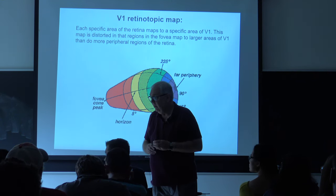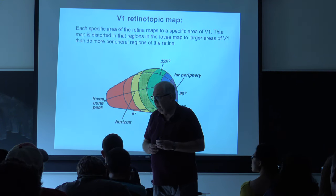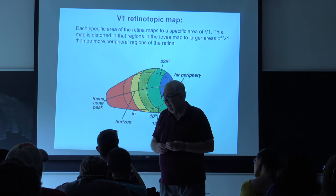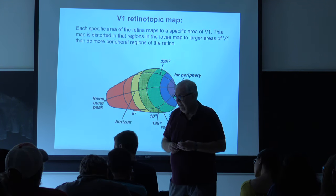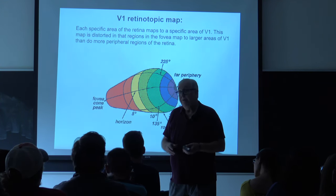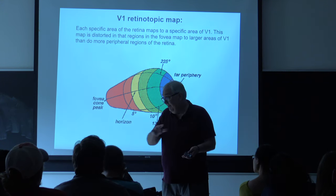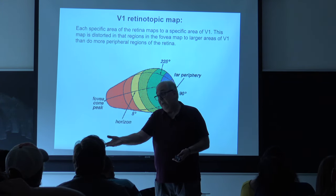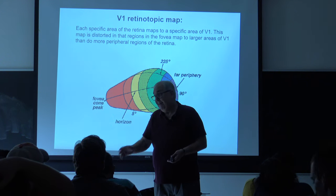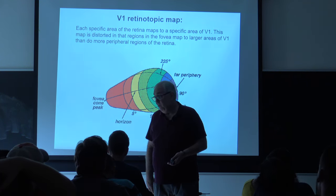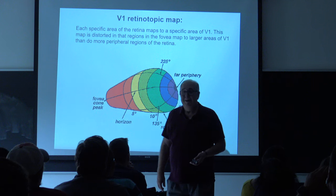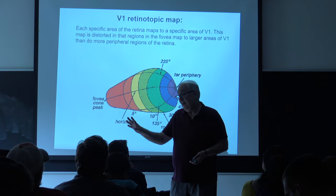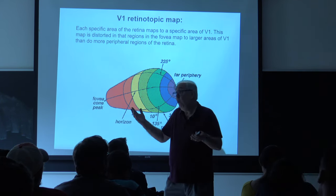A student asks whether flickering lights in the periphery can make you nauseous. The answer is yes, you're more sensitive to flicker in the periphery. Whether that makes you nauseous is a whole other beast — motion sickness is a very complicated phenomenon.